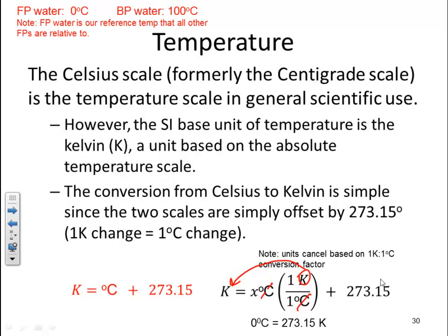In essence, if you plug in zero degrees C, your one-to-one ratio, and add 273.15, we know that zero degrees C is equivalent to 273.15 Kelvin on the Kelvin scale.